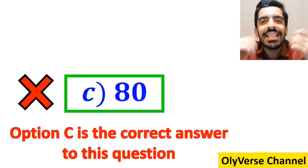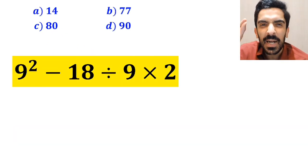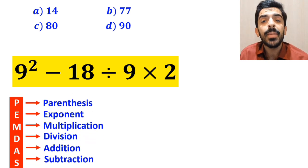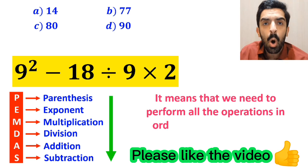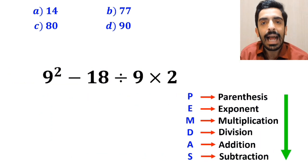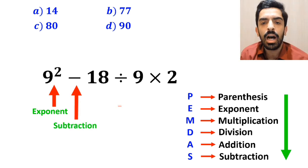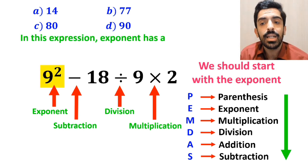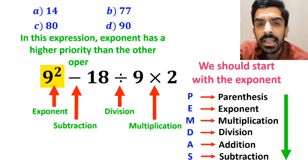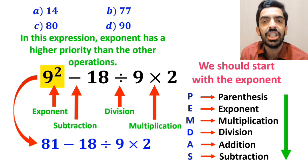Now let me show you how to solve this expression correctly. To solve this problem we must follow the PEMDAS rule, performing all operations in order. As you can see on the screen, this expression has an exponent first, then a subtraction sign, followed by a division, and finally a multiplication. We should start with the exponent since it has the highest priority, so the expression simplifies to 81 minus 18 divided by 9 times 2.